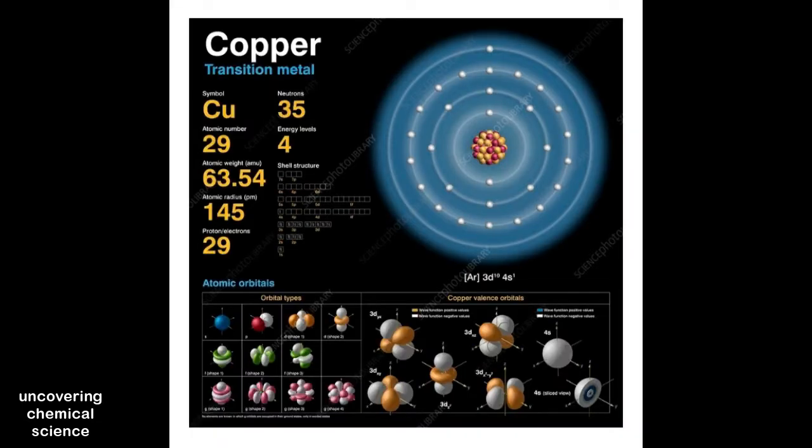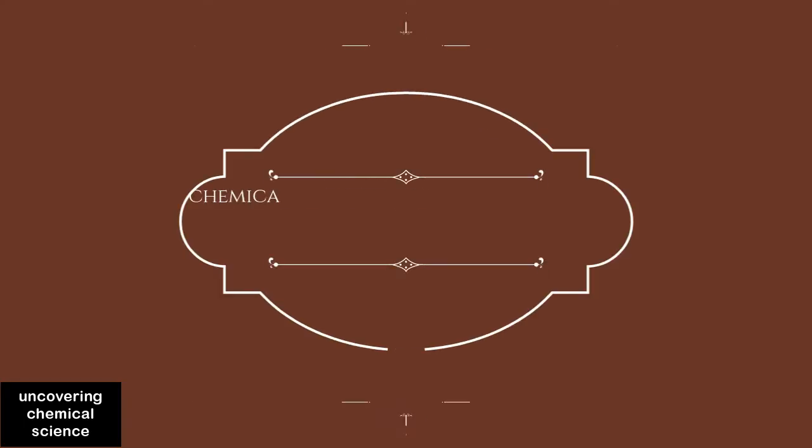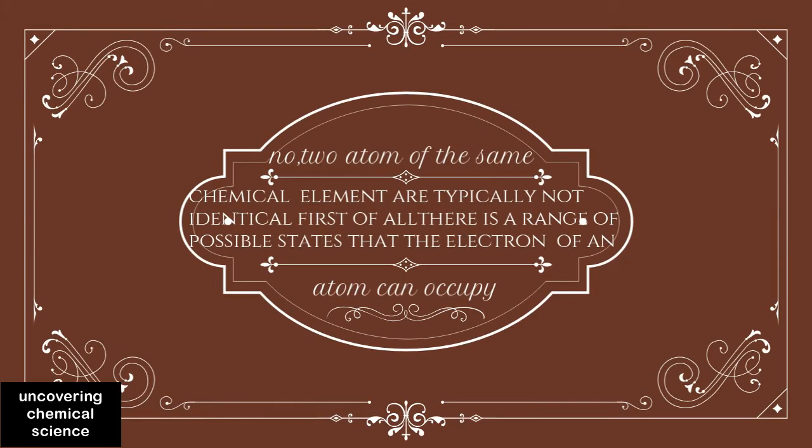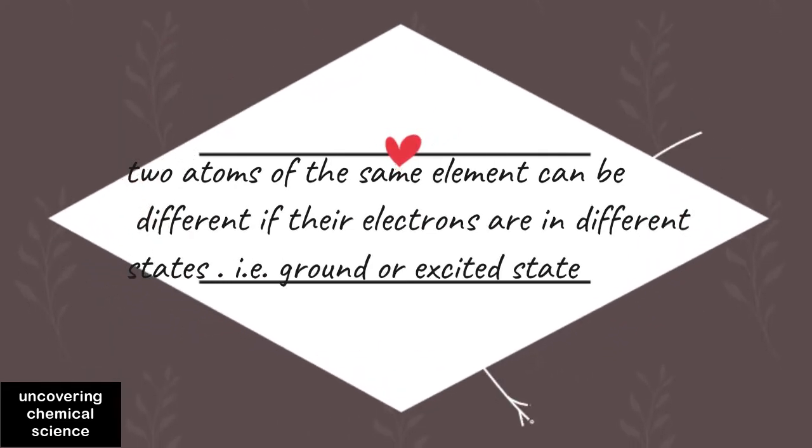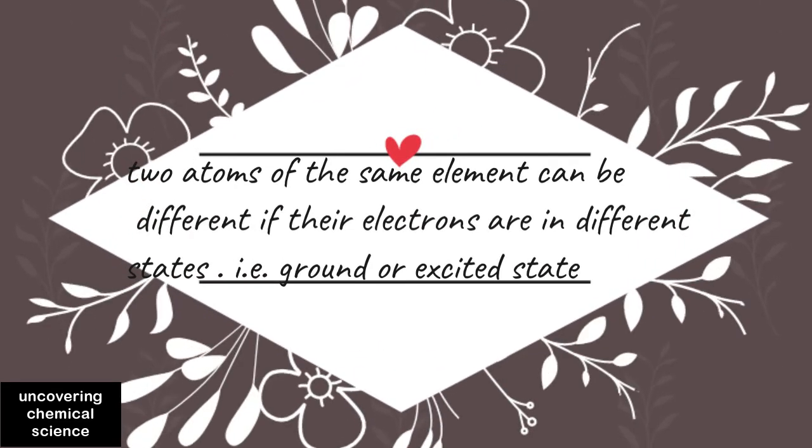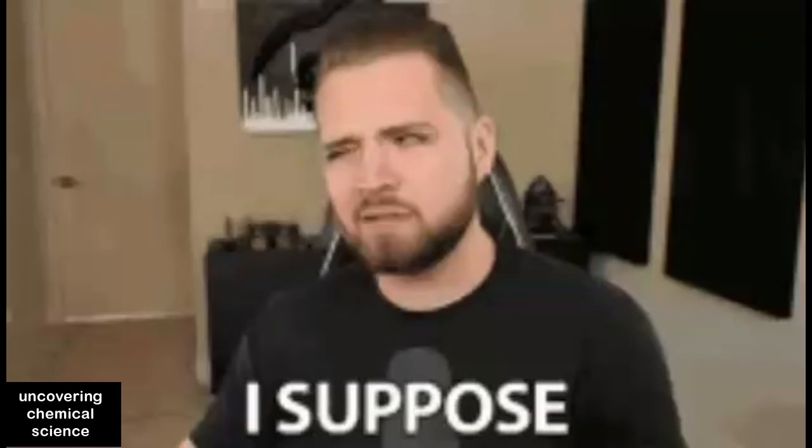First of all, there is a range of possible states that the electrons of an atom can occupy. Two atoms of the same element can be different if the electrons are in different states, that is ground or excited state.